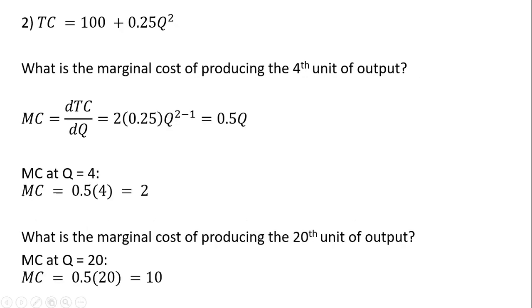Here, the total cost equals 100 plus 0.25q squared. Let's find out what the marginal cost of producing the fourth unit of output is. We get the derivative of total cost, which gives us marginal cost. The derivative of 100 is 0. For the last term, we bring the 2 down in front, so it's going to be 2 times 0.25, and then we subtract 1 from the exponent on q squared.